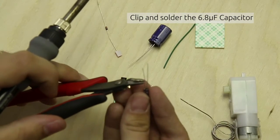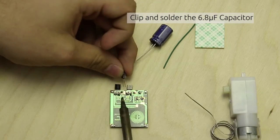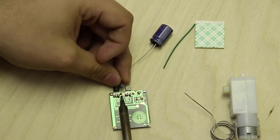We'll now cut the capacitor down to length. We'll just make sure the polarity is correct and solder it down.